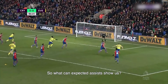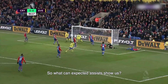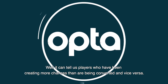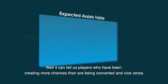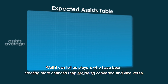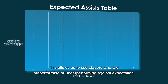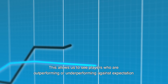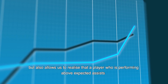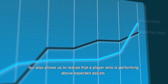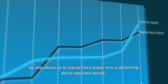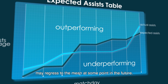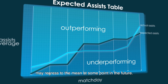So what can expected assists show us? It can tell us which players have been creating more chances than have been converted, and vice versa. This allows us to see players who are outperforming or underperforming against expectation, and also to realize that a player performing above expected assists may regress to the mean at some point in the future.